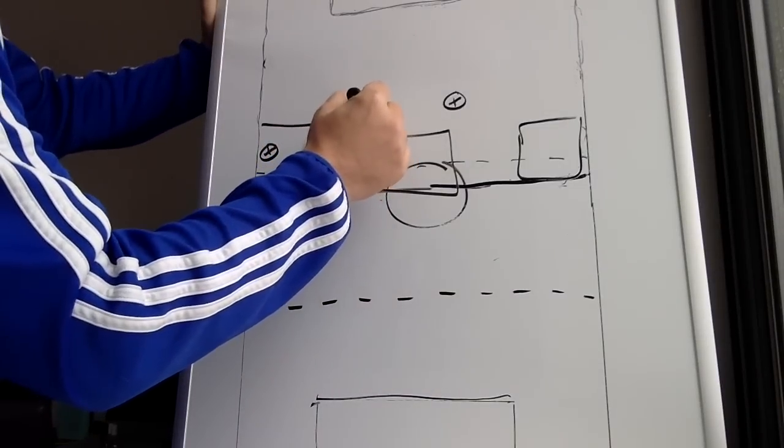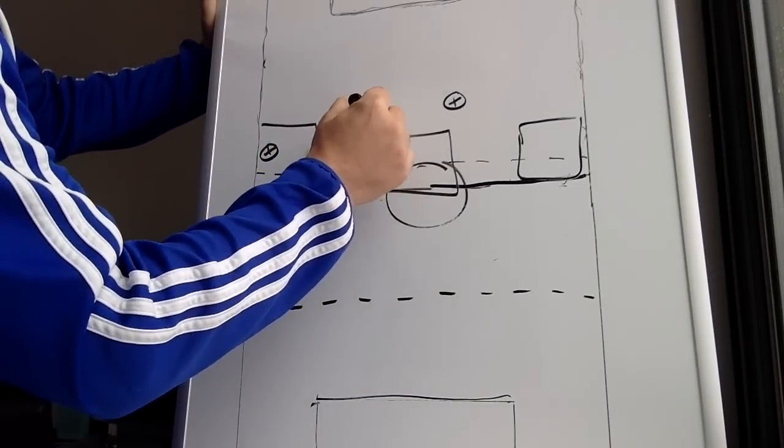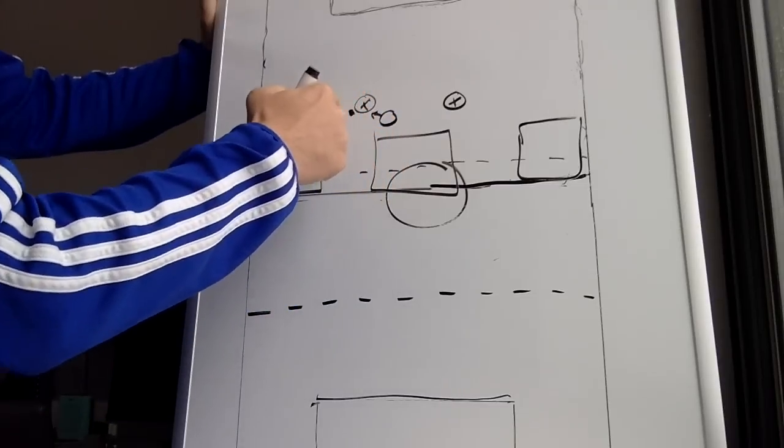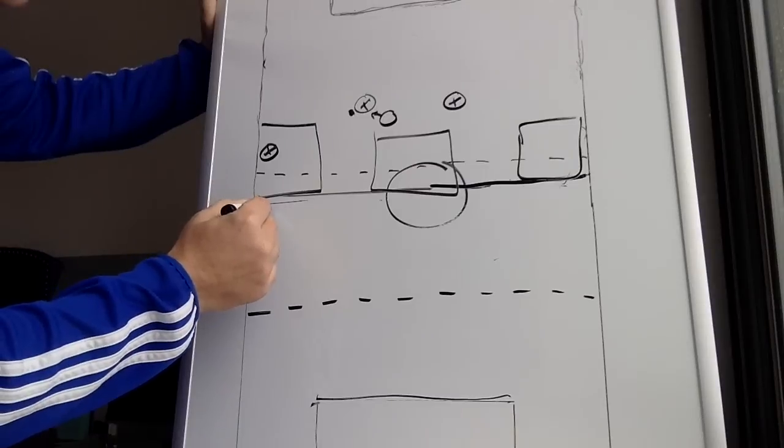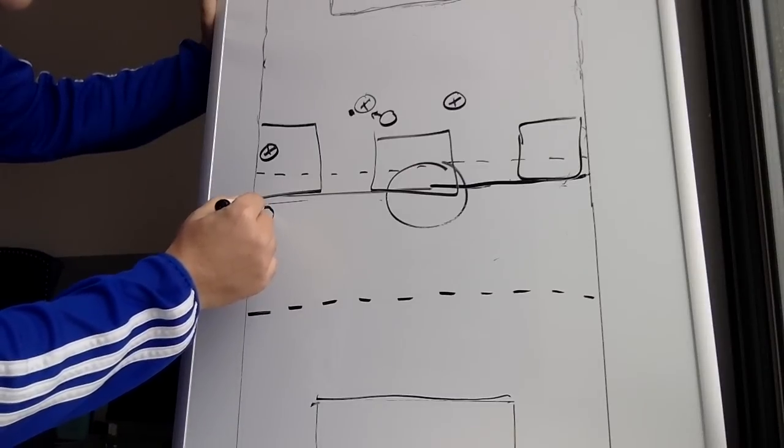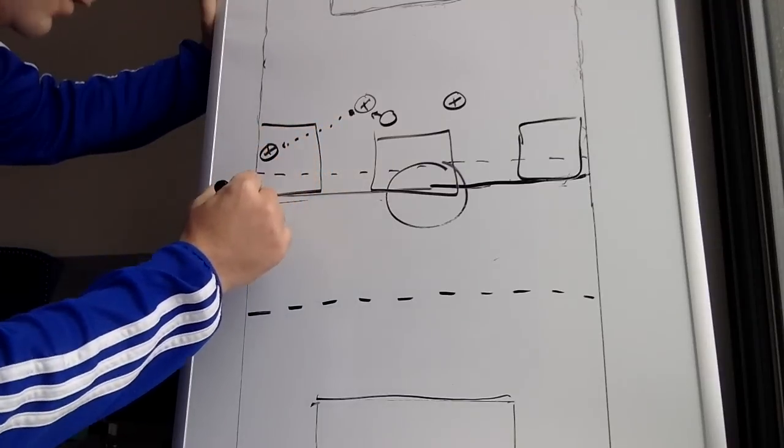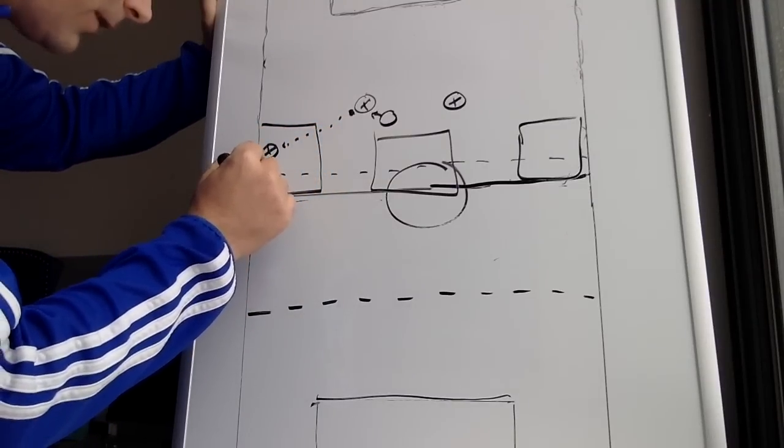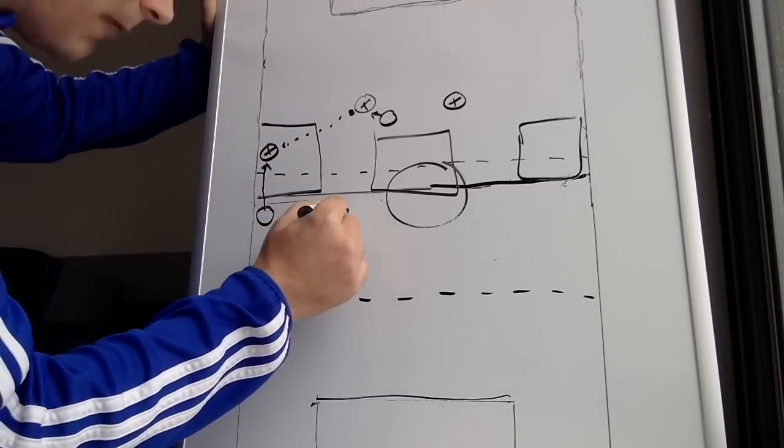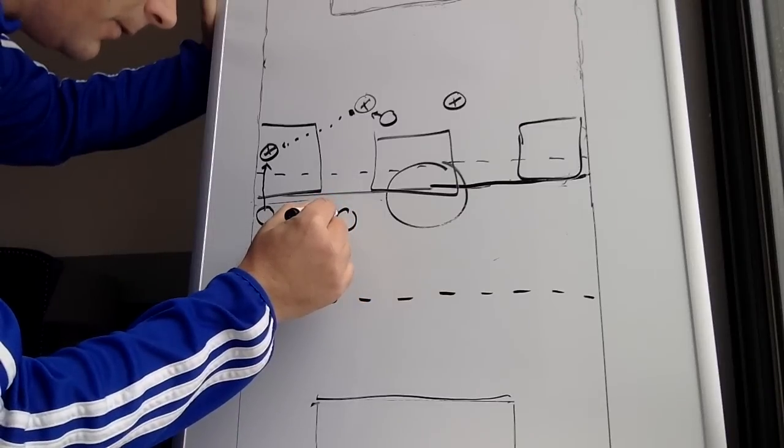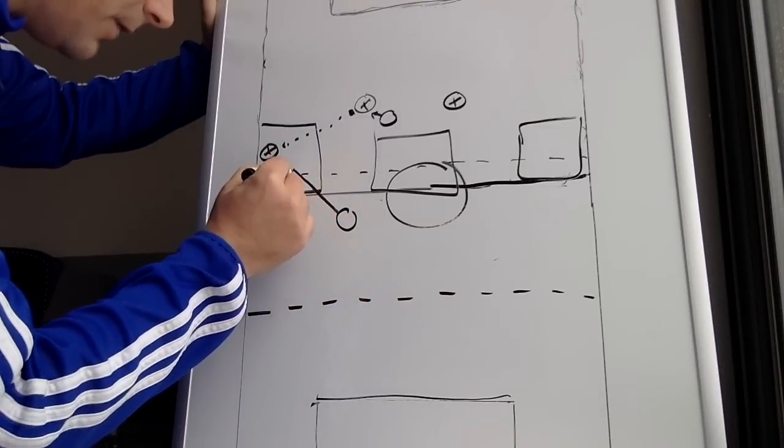So our forward will push this center back to play this way. At the same time, our winger, as this ball is in flight, the winger will close very quickly in here. We will have a center midfielder also closing here.